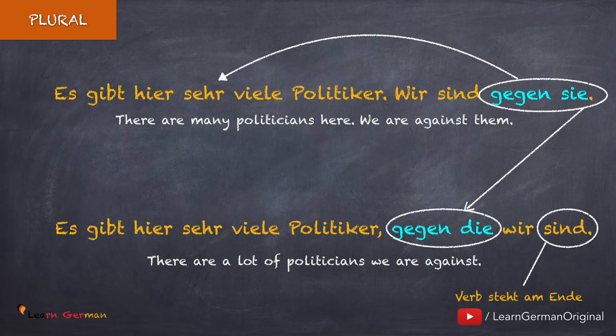So, when you have accusative prepositions in your sentences and you need to make a relative clause, the relative clause will begin with the preposition, which will be followed by the relative pronoun.